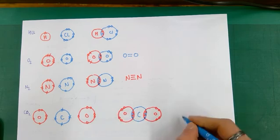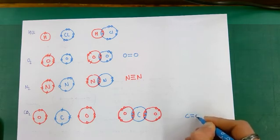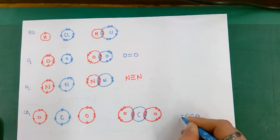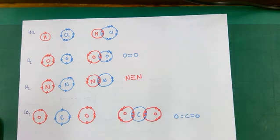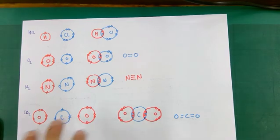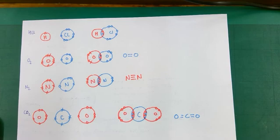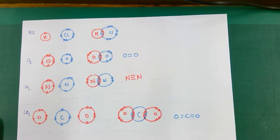To draw CO₂ with line diagrams: a double bond to the oxygen on one side and a double bond to the oxygen on the other side gives the completed molecule. Drawing out the atoms before you start and visualising how you're going to overlap and create shared pairs is a really nice way of representing covalent bonding. Hope this helps you to complete these successfully.